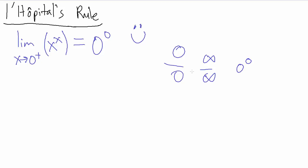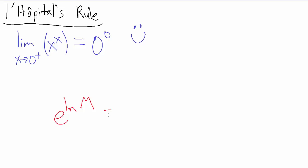That tells us we can do some algebraic manipulations on x to the x so that hopefully we can get to a form that gives us 0 over 0 or infinity over infinity. With exponential expressions like this they're a little tricky. What we want to do is something kind of backwards from pre-calculus: remember that e to the natural log of something just gives you that thing back. We're going to use this property in reverse — starting with x to the x and saying that equals e to the natural log of x to the x.